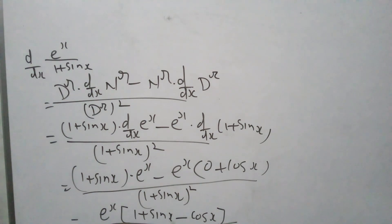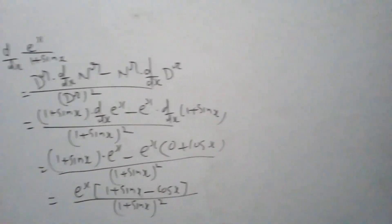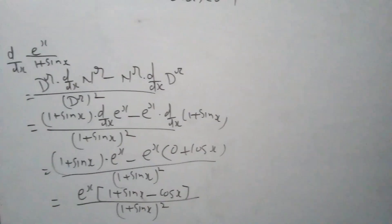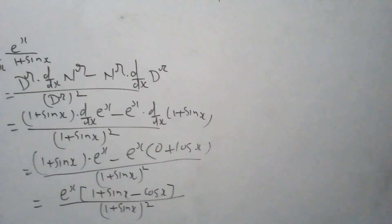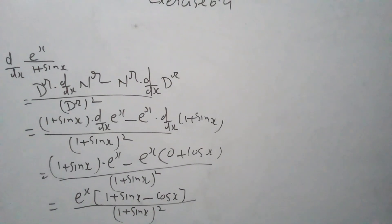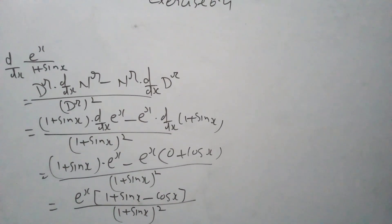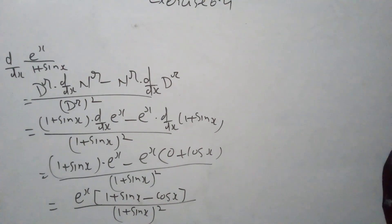The result simplifies to 2 plus sin x over the whole square.